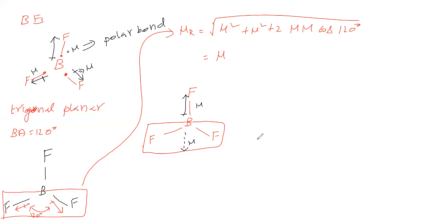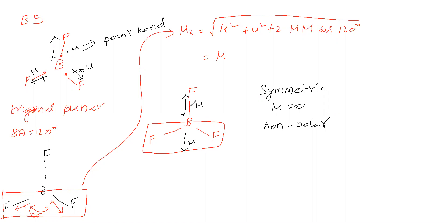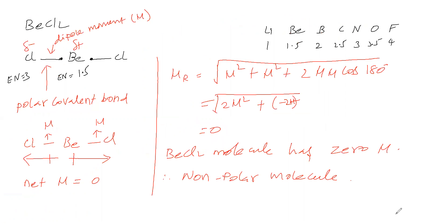Symmetric molecules have zero dipole moment and are non-polar. A molecule is symmetric when all surrounding atoms are the same, all bonds have the same nature, same bond length, same bond energy, and the bond angles are equal everywhere. So BF₃ is symmetric — dipole moment is zero — and is a non-polar molecule with polar bonds.